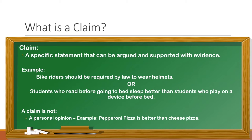We do this all the time and we don't even think about it. Here's an example: bike riders should be required by law to wear helmets. Or, students who read before going to bed sleep better than students who play on a device before bed. These are very specific statements that we can go find evidence to support. A claim is not and should not be a personal opinion. For example, pepperoni pizza is better than cheese pizza. A personal opinion uses words like better or best, and they're subject to interpretation — it's really just your own opinion.